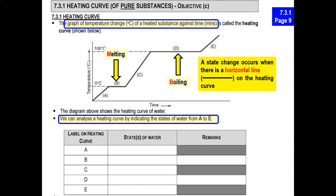When we see the flat parts of the graph, we know that there is a process happening. The flat part at the lower temperature has to be your melting point, and the flat part at the higher temperature is your boiling point.